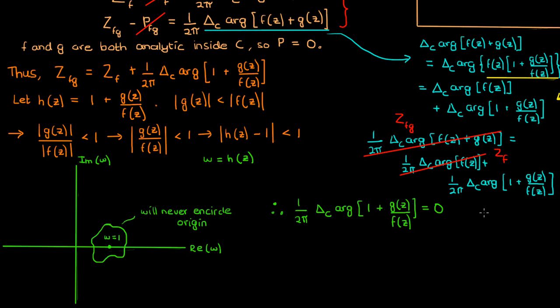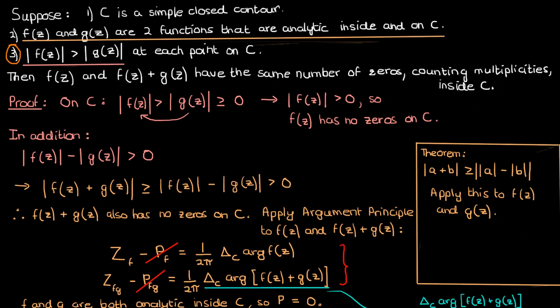Since a contour that does not encircle the origin has winding number 0, applying this result leaves us with the expression that the zeros of f plus g counting multiplicities inside C equals the zeros of f inside C. This is exactly what Rouché's theorem required us to prove — that f and f plus g have the same number of zeros inside the contour C counting multiplicities. This completes our proof.